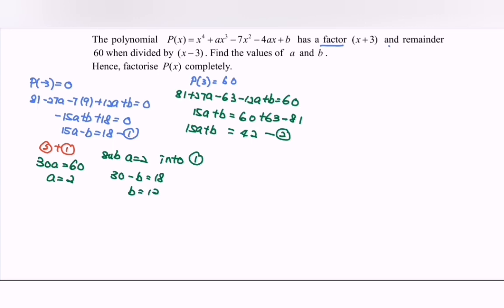This means that P(x) equals x to the power 4, and then with A equal to 2, we have 2x³ - 7x² - 8x + 12. That would be the polynomial.